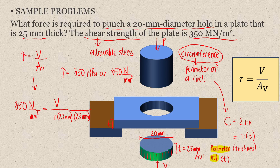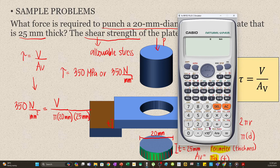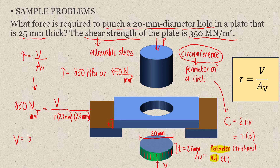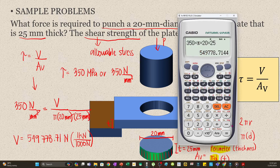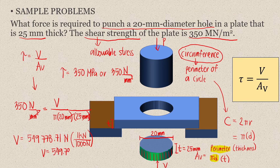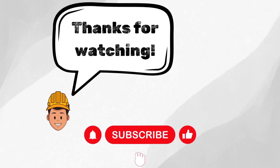We will now solve for force V. Using our calculators: V equals 350 times π times 20 times 25, which gives 549,778.71 N. Usually, if we have large forces, we convert to kN to simplify the result. Dividing by 1000, we get 549.78 kN. This is our answer — both 549,778.71 N and 549.78 kN are correct depending on the unit required.